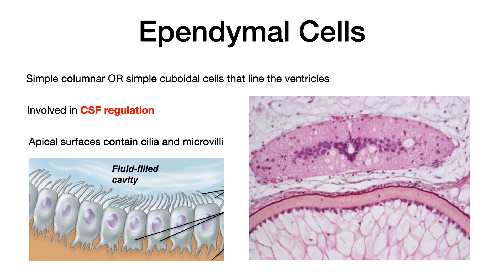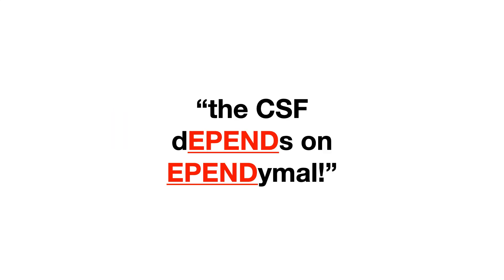The last cell type is ependymal cells. Ependymal cells are involved in CSF regulation — they line the ventricles and can be simple columnar or simple cuboidal cells. Just as columnar and cuboidal cells are functionally involved in fluid regulation, ependymal cells regulate CSF. The apical surface of the ependymal cell contains cilia and microvilli that usher the CSF along, helping maintain that fluid compartment. Mnemonic: 'the CSF depends on ependymal' — and in 'depends' you can see E-P-E-N-D for ependymal.